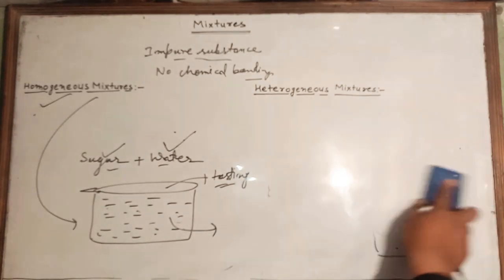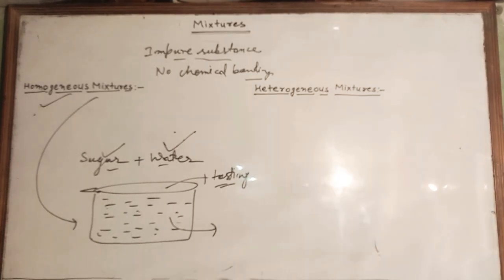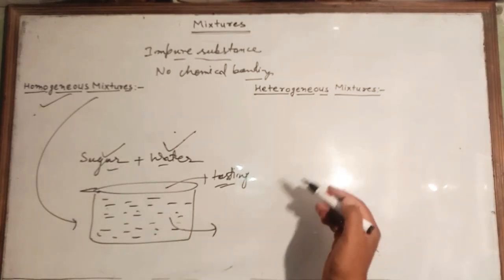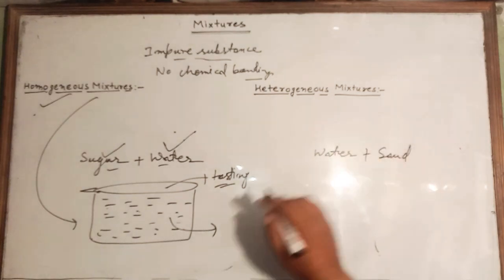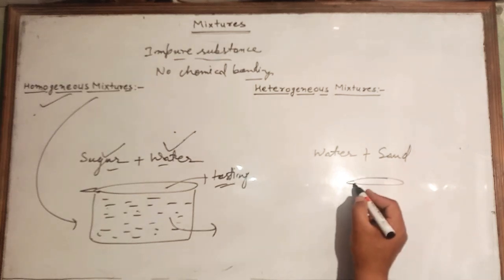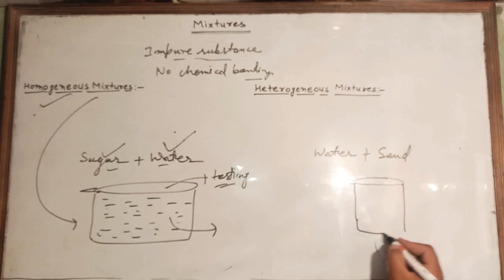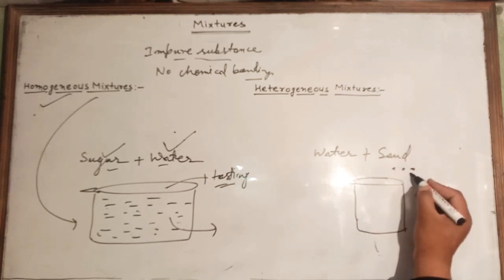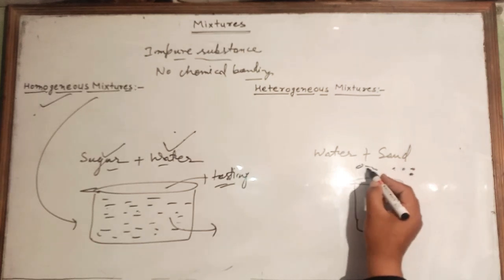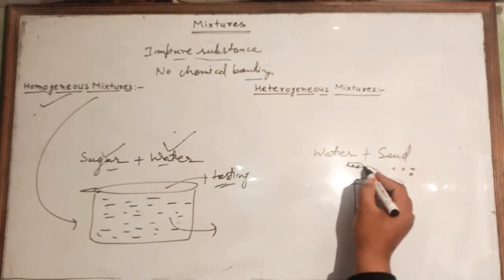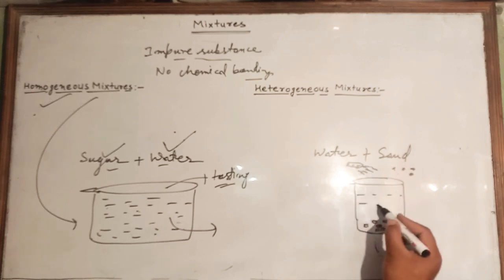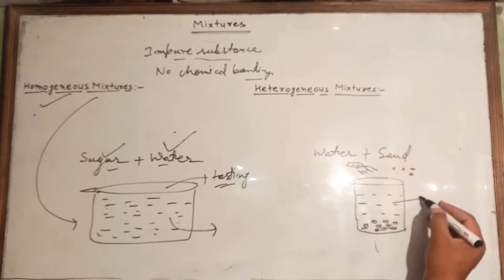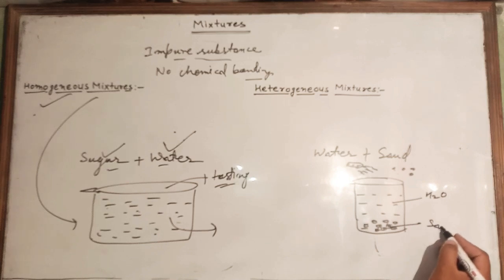Another type of mixture is the heterogeneous mixture. Suppose instead of sugar and water, we take water and sand particles. If we mix them in a beaker, the sand particles will settle down at the bottom after stirring. After some time you can easily recognize that water is on top and the sand particles are at the bottom.